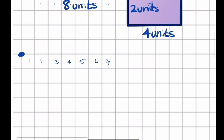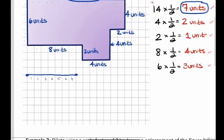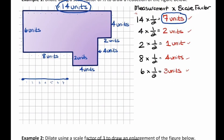We know that dilates to 7 units because we multiplied by one-half. I'm going to draw a section starting right here — it doesn't really matter where you start, but we need to make it 7 units. Be careful: the biggest mistake people make when counting is they go 1, 2, 3, 4, 5, 6, 7 and end up short. There's our first side — a 7-unit side. Now the next one: 4 units dilated to 2, so I'm going to go down 2.